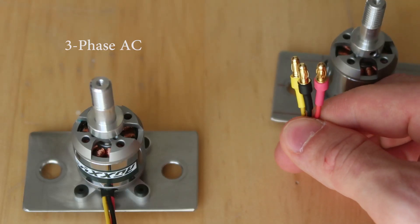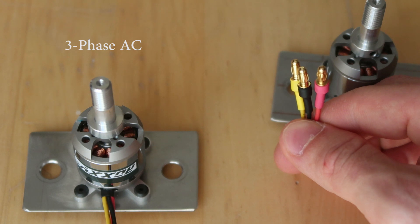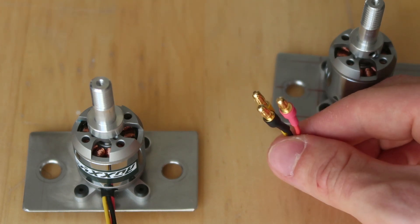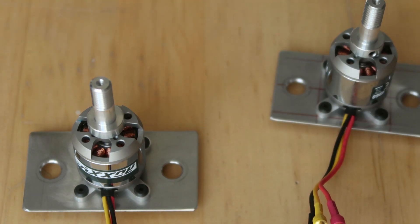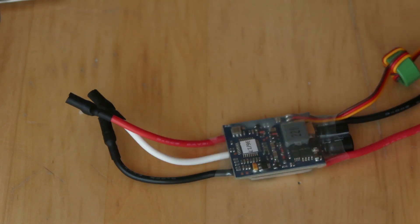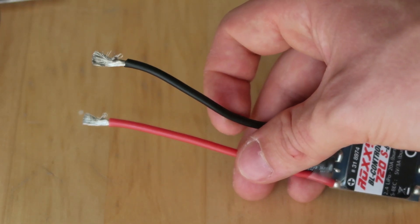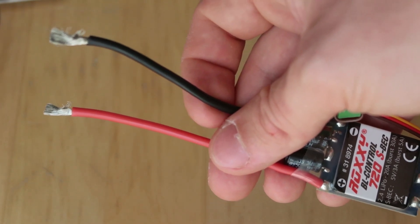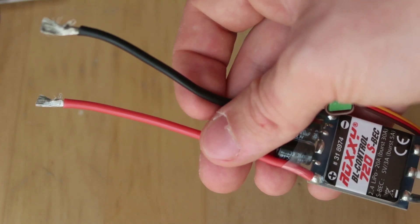As you can see they have three cables because they need three-phase alternative current. To be able to power them correctly we need some ESCs which stands for electronic speed control. So here you have the three phases and here we have the DC power supply. So this is basically transforming DC current into three-phase alternative current.